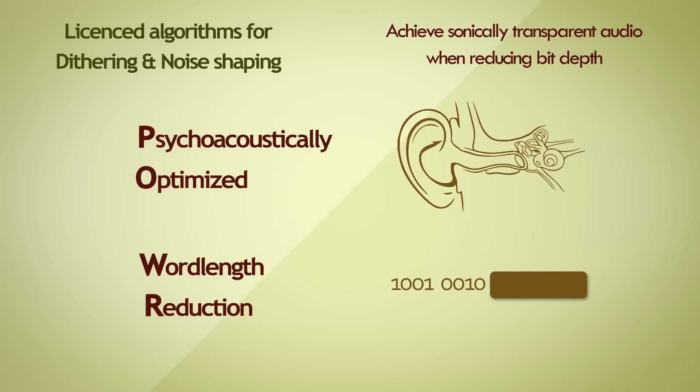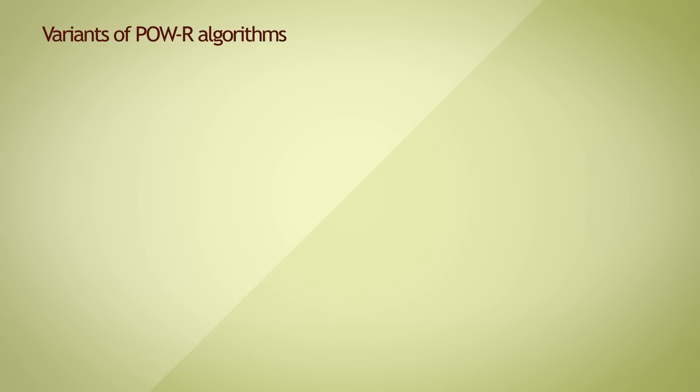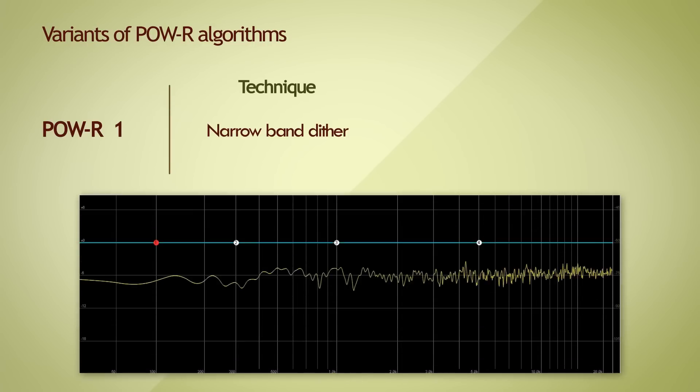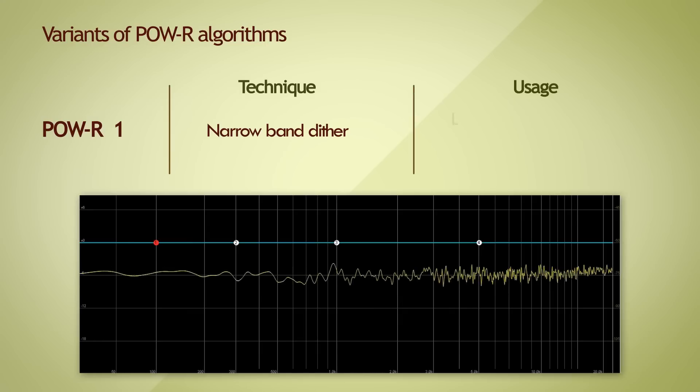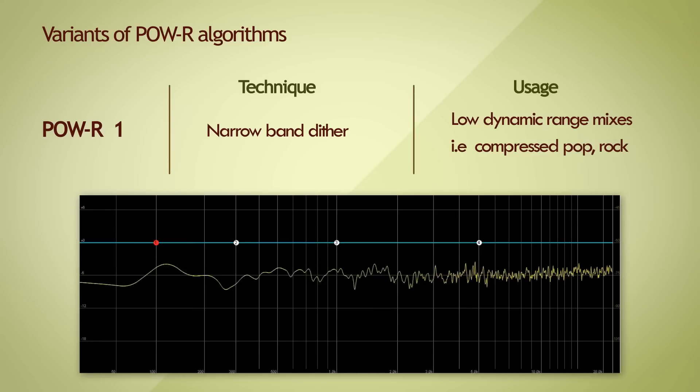Chances are, that these are the algorithms implemented in your DAW software. They are quite common. There are three variants to it, and are used for different audio use cases. The POW-R 1, or the original POW-R algorithm, doesn't have any noise shaping at all. It uses a narrow band dither, and the noise is white. This is generally used with low dynamic range mixes, like compressed pop, rock, or metal, where you don't tend to hear noise from quantization.